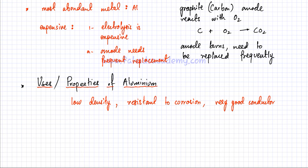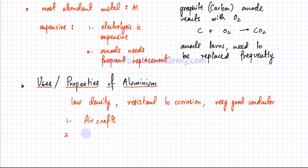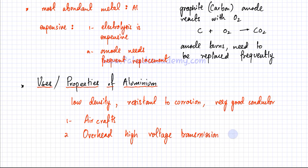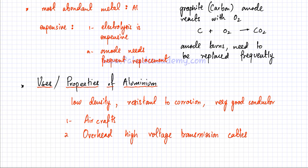These properties define its main uses. First, aluminium is used in aircraft because of its low density, lightweight nature, and resistance to corrosion — large structures need to be lightweight. Second, it is used for overhead high-voltage transmission cables because it is a very good conductor with low resistance, meaning less heat loss, and it is also lightweight and resistant to corrosion.